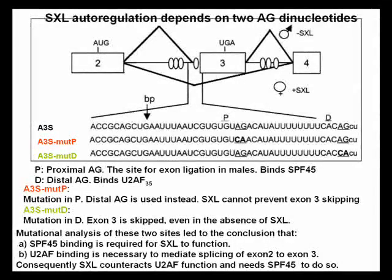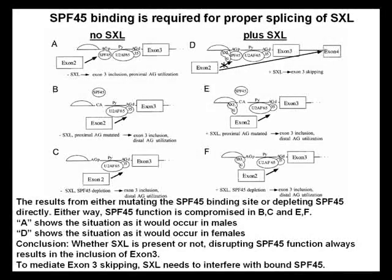Sex lethal auto-regulation depends on two AG dinucleotides. Mutation in P — the distal AG is used instead — means sex lethal cannot prevent exon 3 skipping. Mutation in D causes exon 3 to be skipped even in the absence of sex lethal. Mutation analysis of these two sites led to the conclusion that SPF45 binding is required for sex lethal to function. U2AF binding is necessary to mediate splicing of exon 2 to exon 3; consequently, sex lethal counteracts U2AF function and needs SPF45 to do so.